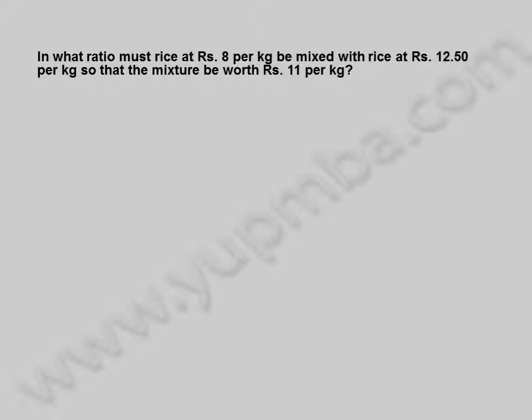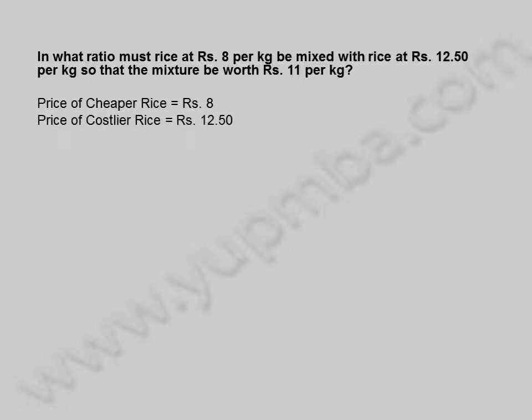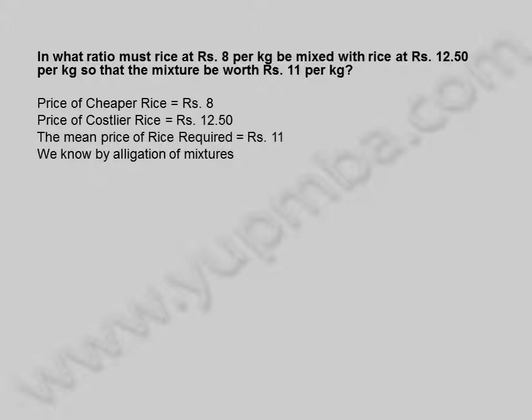In what ratio must rice at ₹8 per kilogram be mixed with rice at ₹12.50 per kilogram so that the mixture be worth ₹11 per kilogram? Price of cheaper rice is equal to ₹8. Price of costier rice is equal to ₹12.50. The mean price of rice required is equal to ₹11. We know by allegation of mixtures,